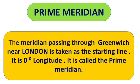Next is the prime meridian. The meridian passing through Greenwich — which is a place near London — is taken as a straight line. It is 0 degree longitude and it is called the prime meridian.